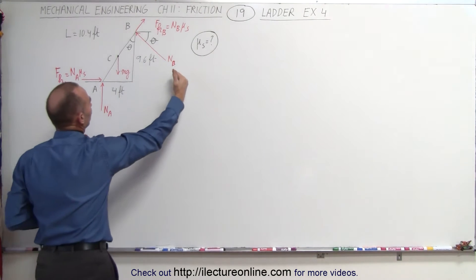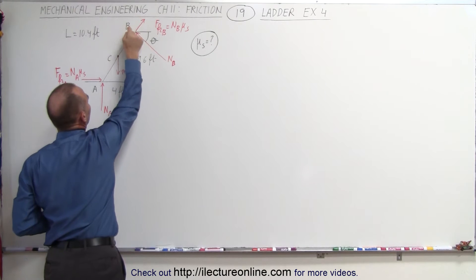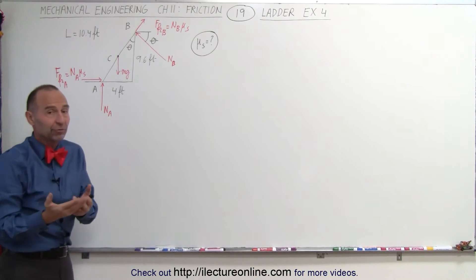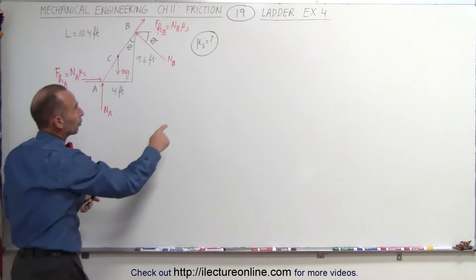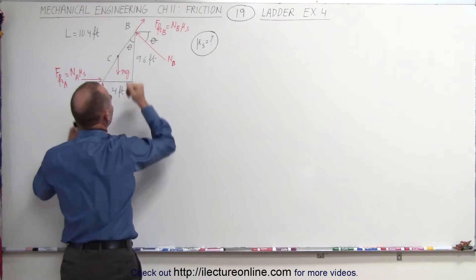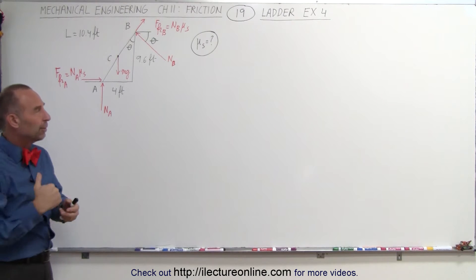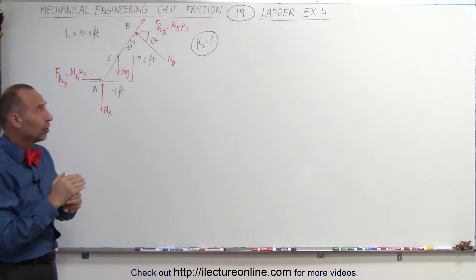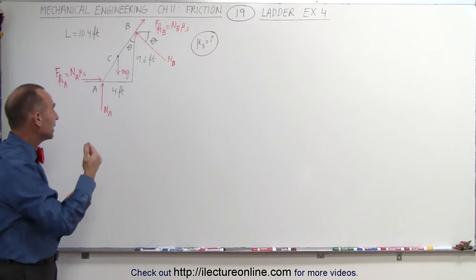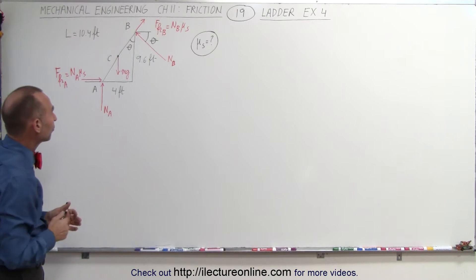This means that the normal force is perpendicular to the ladder at that point, and the friction force will be parallel to the ladder at that point, because the friction force must be perpendicular to the normal force. We're looking for the coefficient of static friction that will prevent the ladder from slipping. We're going to use the sum of all forces in the x-direction to find a relationship between the normal force at A, the normal force at B, and the coefficient of static friction.